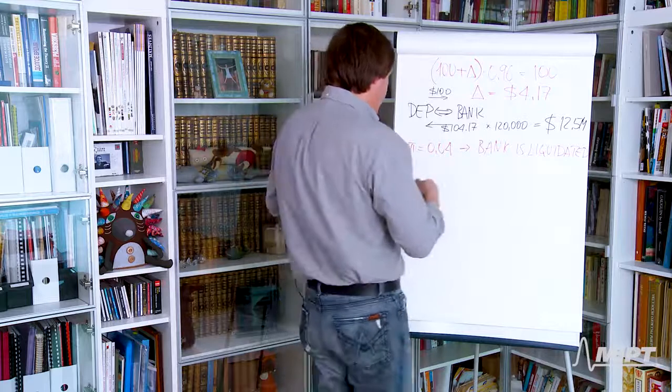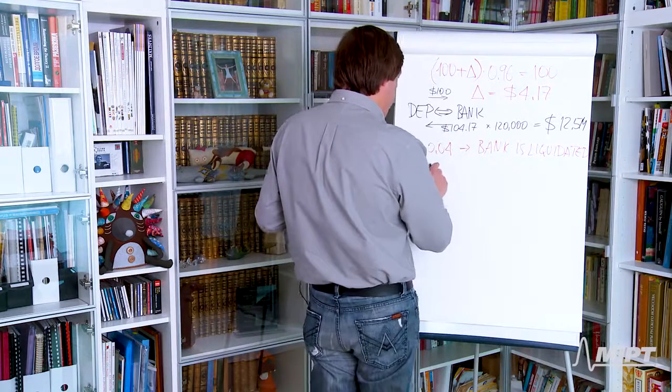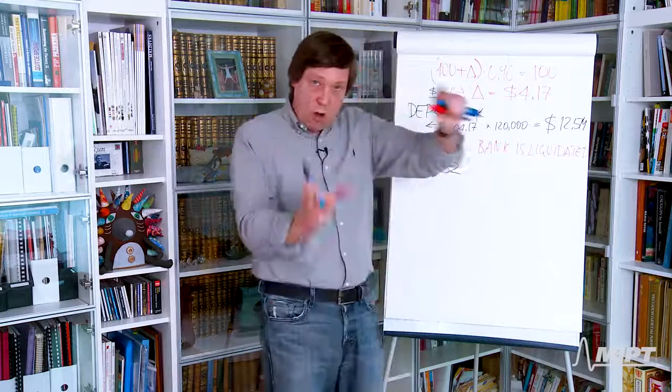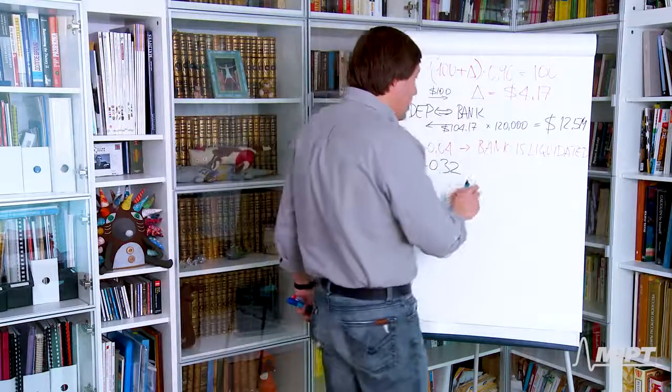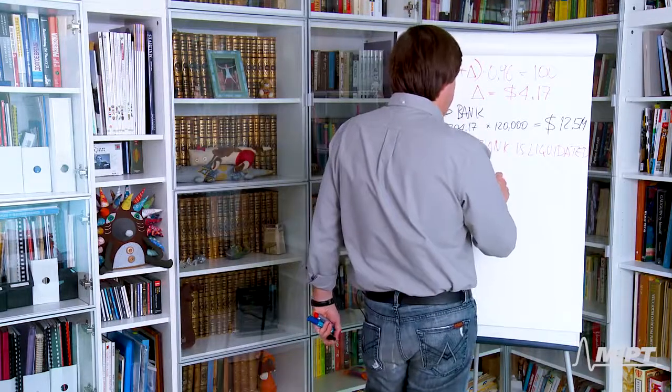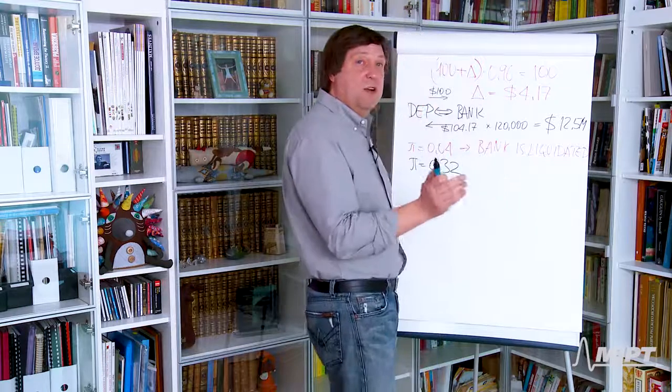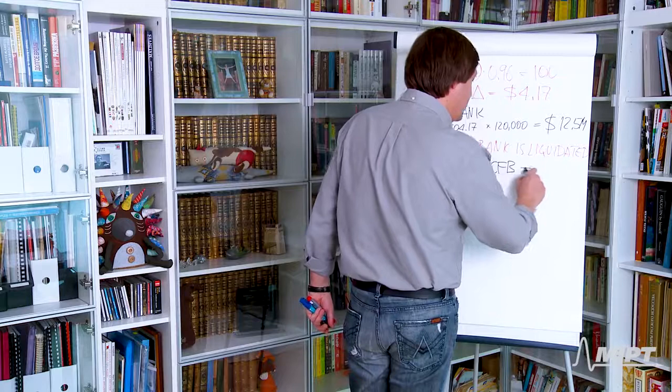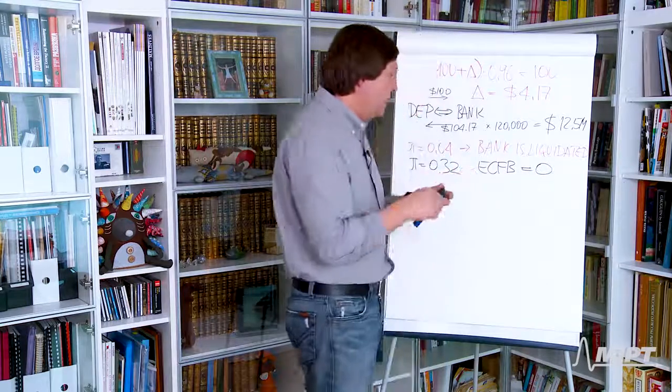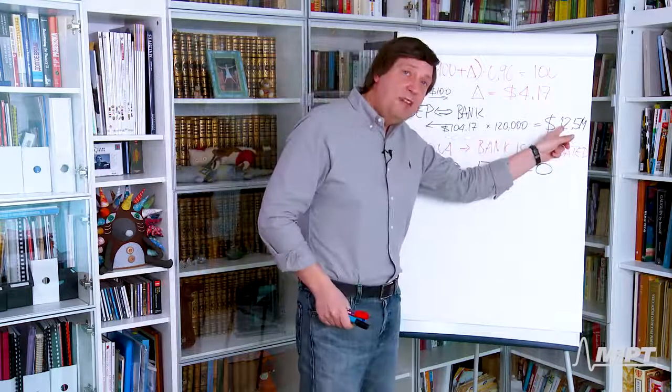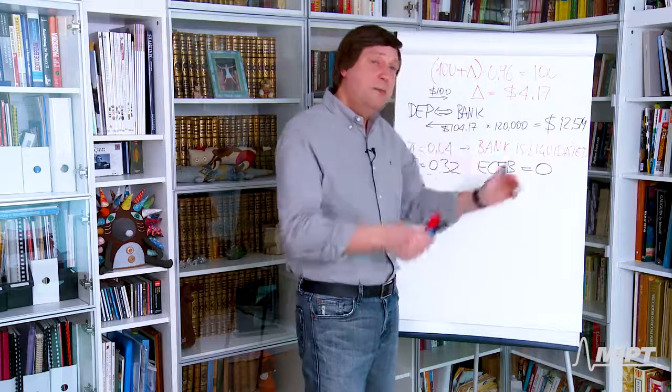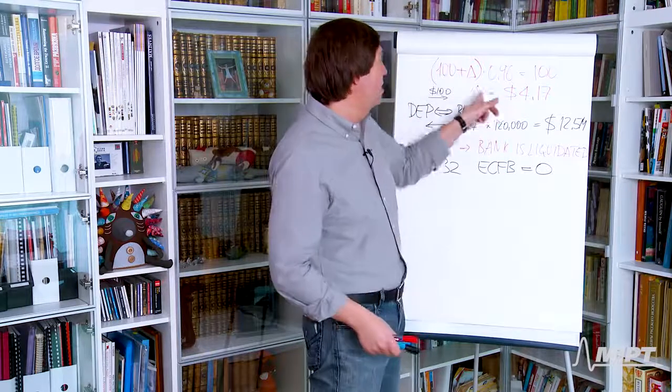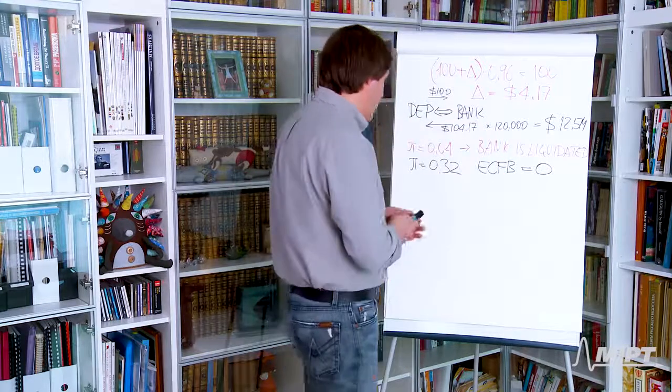Now, with the probability of 0.32, these are the two long boxes combined. We can see that the bank does deliver on its obligations, but expected cash flow to the bank is just zero because the bank collects exactly this amount and all the money is paid to the depositors based on this contract with this small delta.